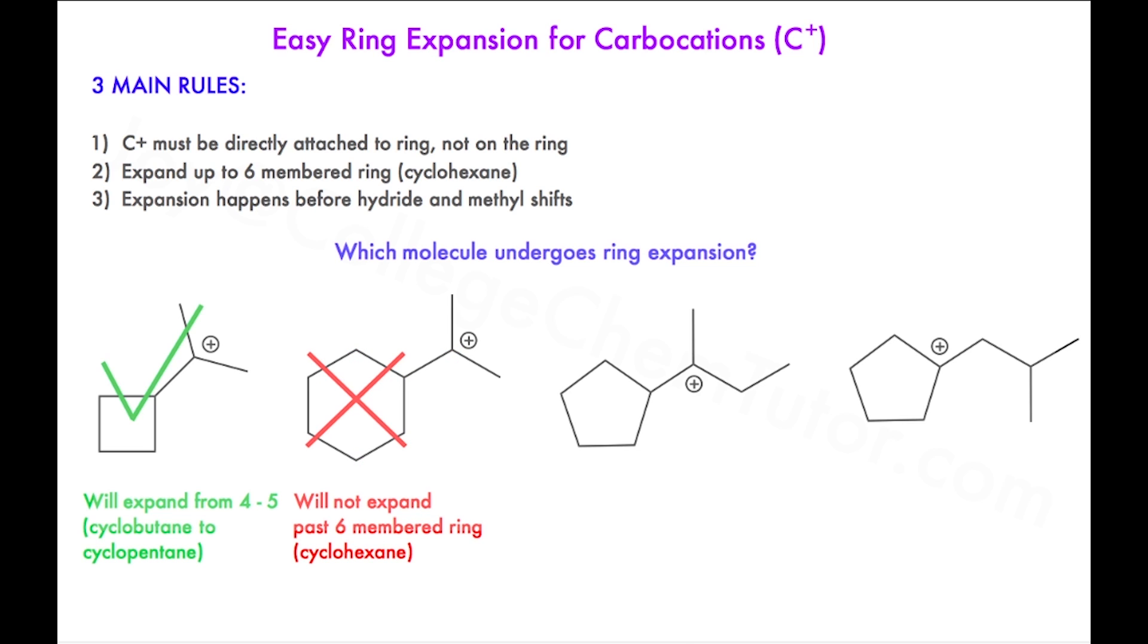This is because six-membered rings are the most stable, and the molecule doesn't want to break itself to form something that's less stable. The next molecule has a carbocation, again in pink, directly attached to a five-membered ring, and so this is also eligible for ring expansion. It will expand from five to six.